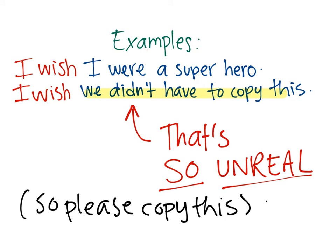Let's check some examples. Here it says: 'I wish I were a superhero.' And: 'I wish we didn't have to copy this.' That's so unreal, so please copy this, kids. 'I wish I were a superhero' — desearía ser un superhéroe. Here we would say desearía. The unreal situation is added with simple past. Remember that the negative form is 'didn't,' so: 'I wish we didn't have to copy this' — desearía que no tuviésemos que copiar esto. But you have to copy it, so remember to copy this in your English notebook.